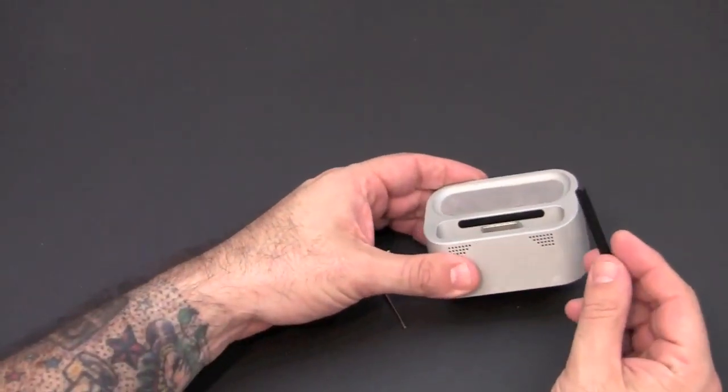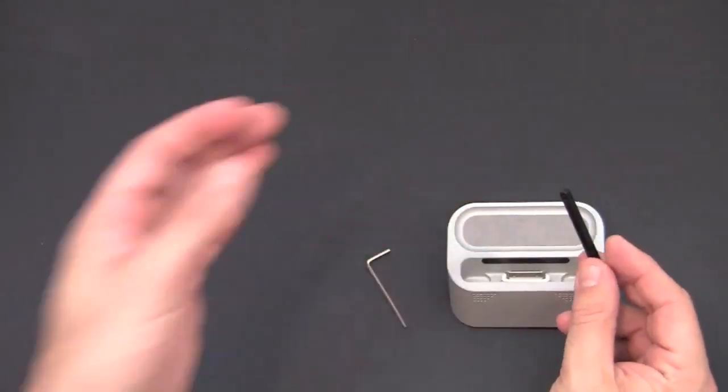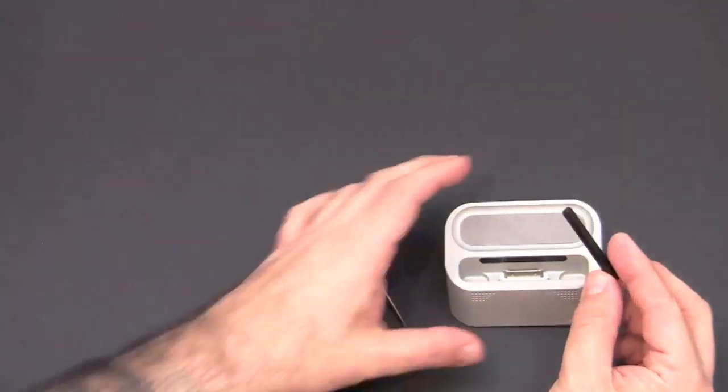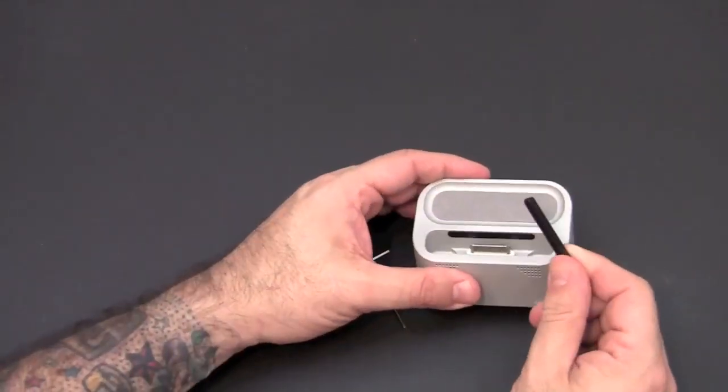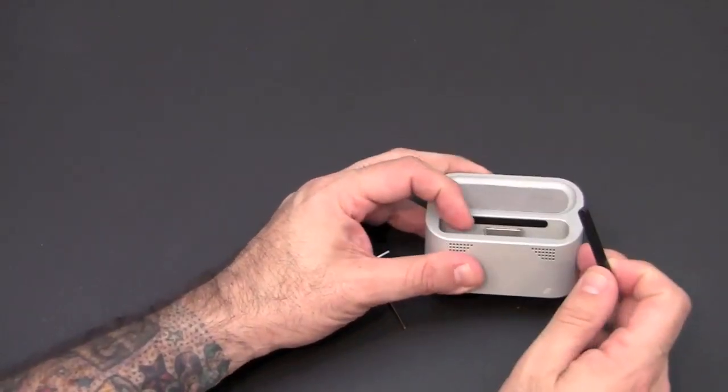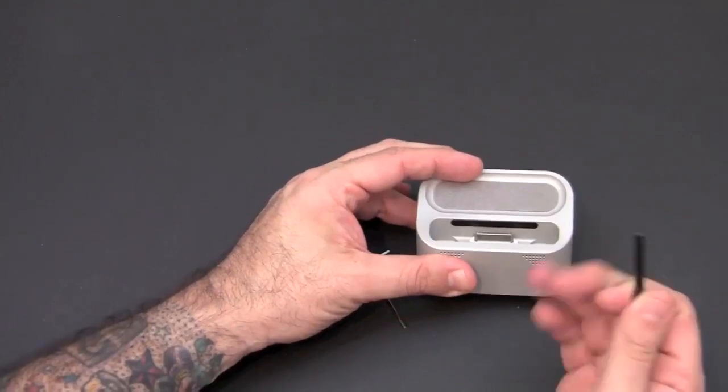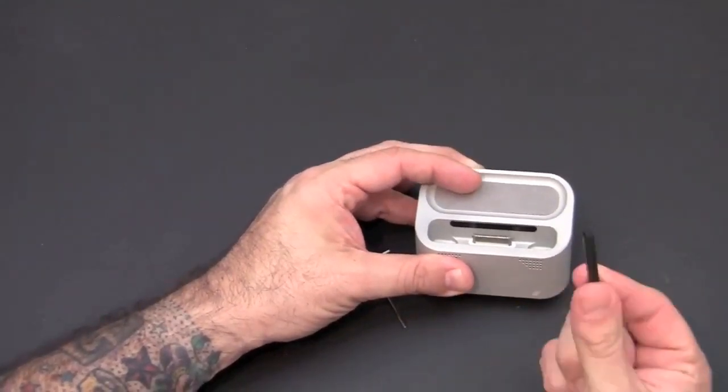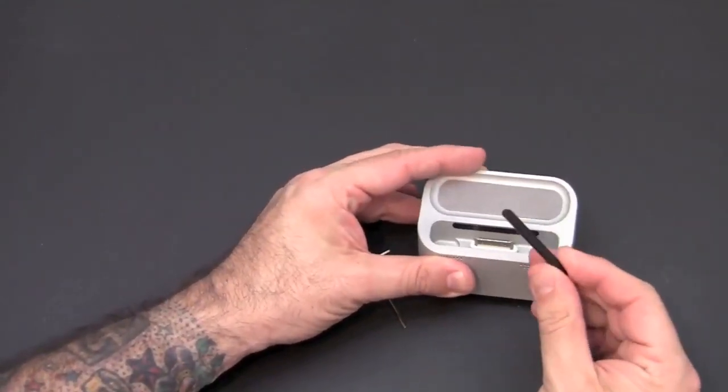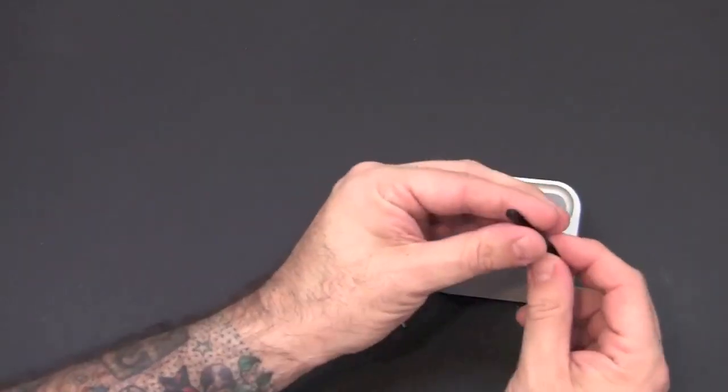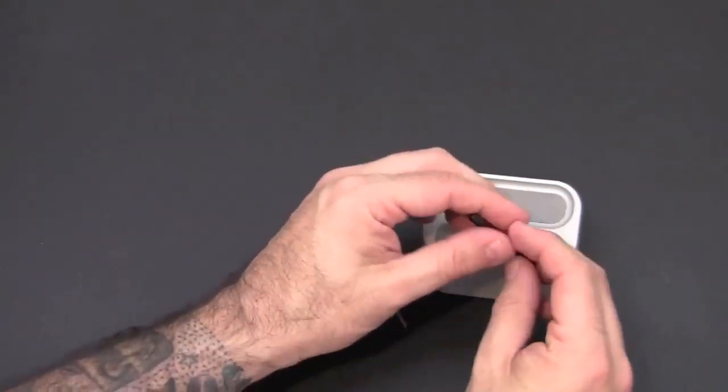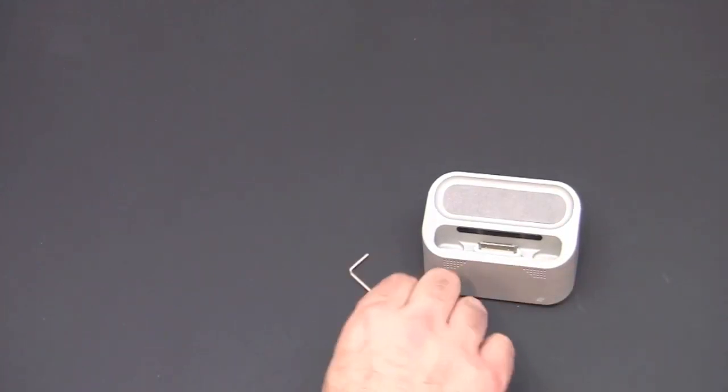Now the spacers, you do get two as I mentioned. One is meant to be used if you are not using a case, specifically an Element Case on the back of your phone. The other which I have inserted already in the little cavity in the back of the Dock is meant to be used if you are using an Element Case on your phone. The one that's inserted now is not as thick as this one. Therefore, it gives more room.